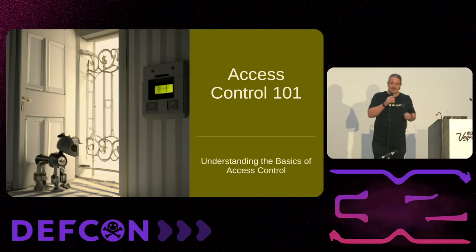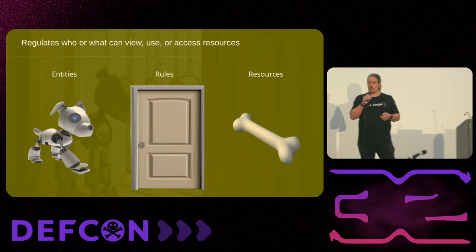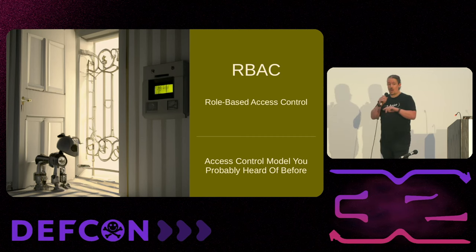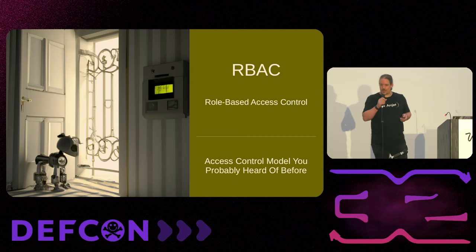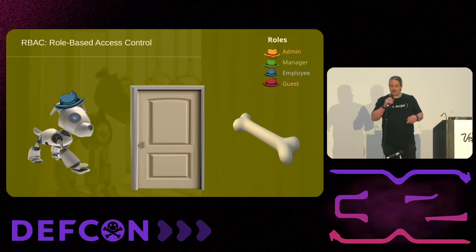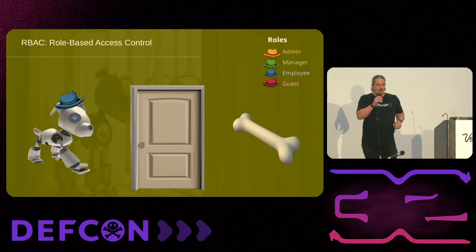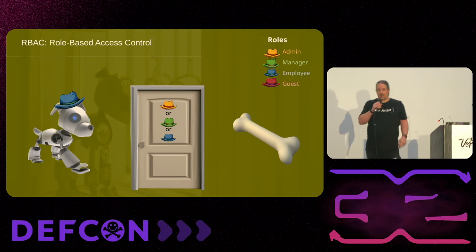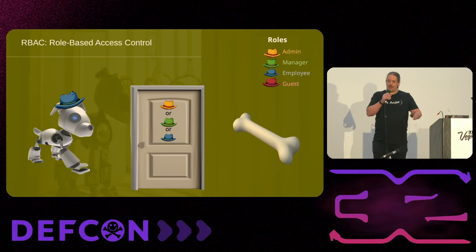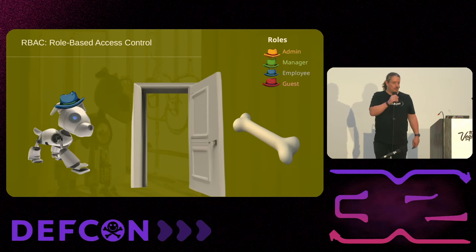Access Control 101. Whenever it comes to access control, the dog wants the bone. We're going to look at ways that we can stop or allow the dog from accessing the bone. The first one is RBAC — role-based access control — probably one of the simplest access control mechanisms. We have a number of roles: admin, manager, employee, and guest. Our dog Shadow has a blue hat — blue hats are employees. The door is locked to all but admins, managers, and employees. Because Shadow has the employee role, the door opens. Role-based access control — nice and simple.